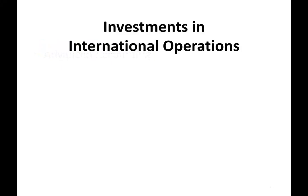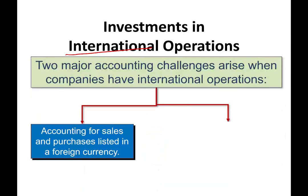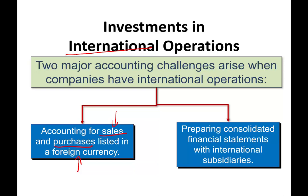So let's go ahead and start to talk about investments in international operations. What are we talking about here? Well, we have a U.S. company that's operating in Europe, in Asia, in South America. As a result, they're going to be faced with two accounting challenges. One, they're going to have purchases and sales in a foreign currency — buying materials or supplies in a foreign currency, or selling their product in a foreign currency. The other issue is they're going to have to prepare consolidated financial statements using U.S. GAAP. In this session, we'll focus on one example for sales and one example for purchases using a foreign currency.